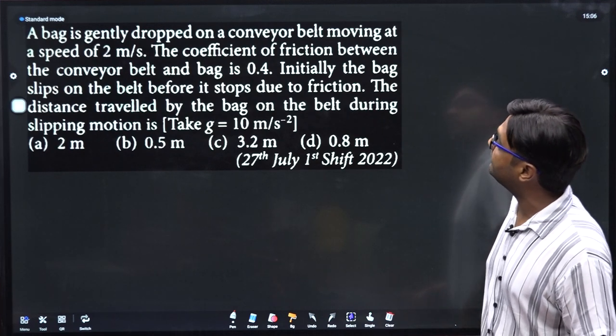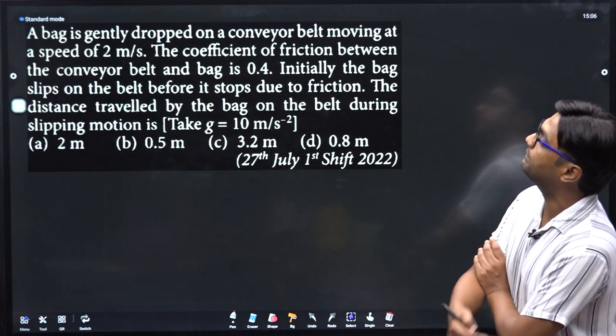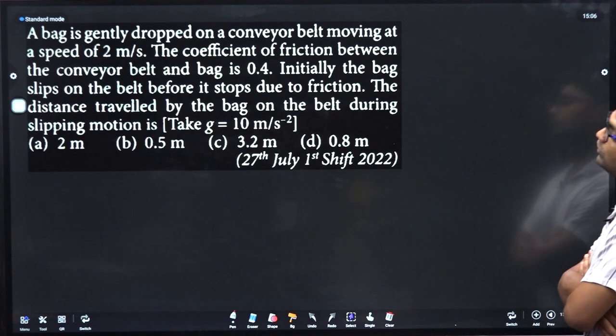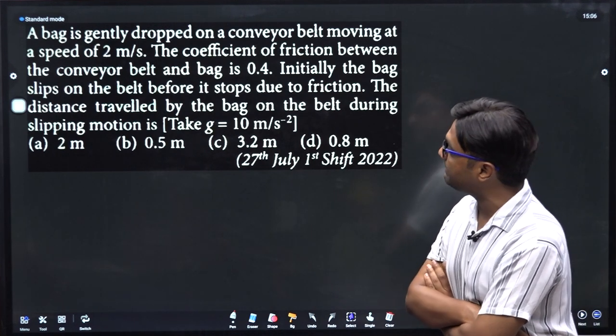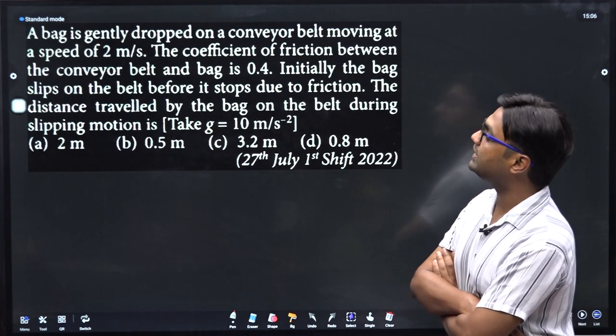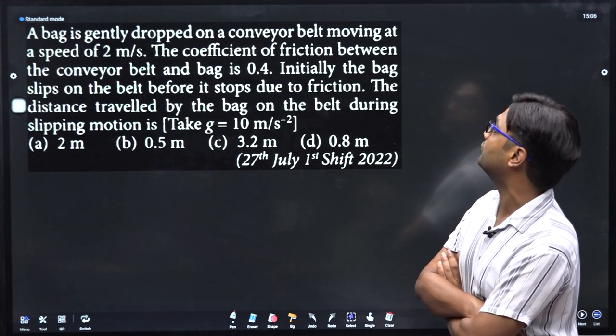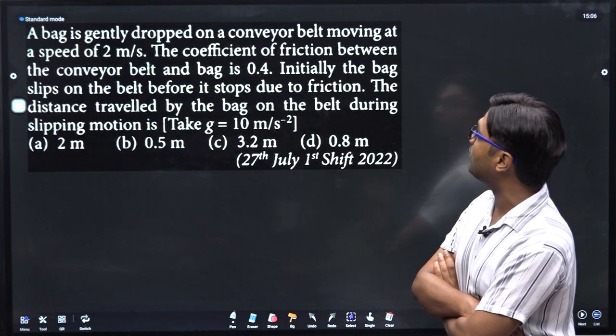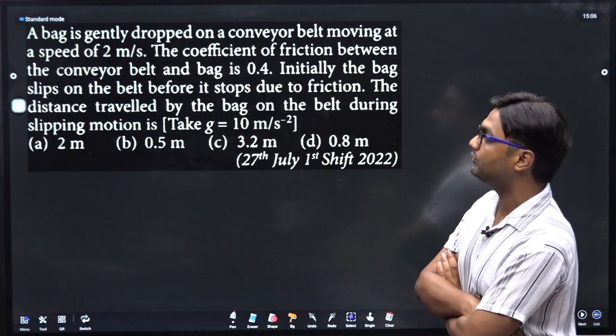A bag is gently dropped on a conveyor belt moving at a speed of 2 meters per second. The coefficient of friction between the conveyor belt and the bag is 0.4. Initially, the bag slips on the belt before it stops due to friction. The distance traveled by the bag on the belt during the slipping motion is...